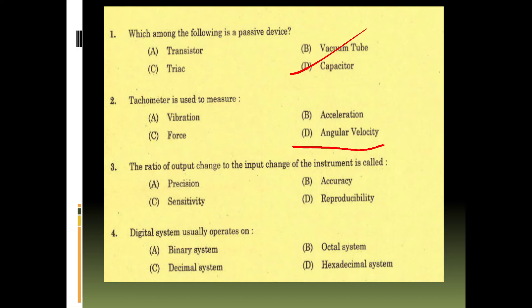Next question: the ratio of output change to input change of the instrument is called - precision, accuracy, sensitivity, reproducibility. Option C - sensitivity of an instrument. Fourth question: digital system usually operates on - binary system, octal, decimal, hexadecimal. This is option A, binary system.